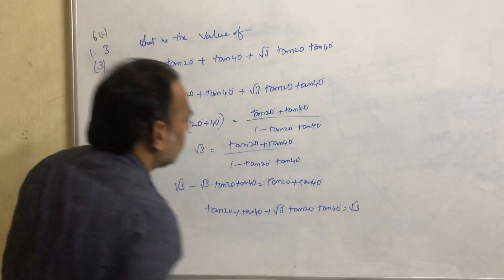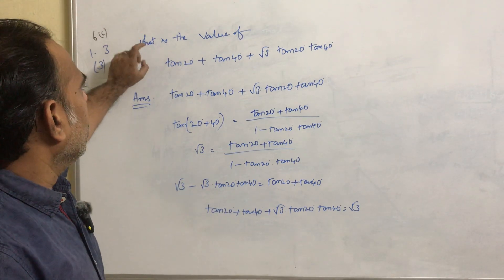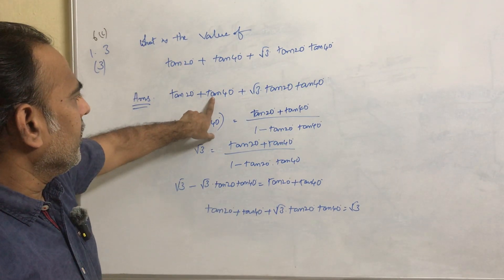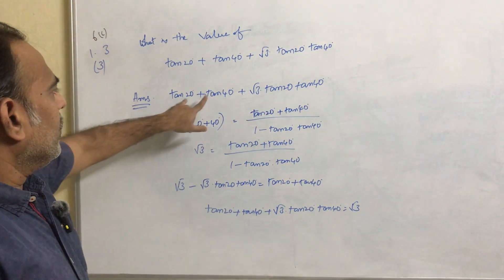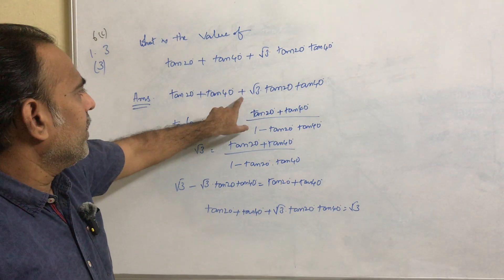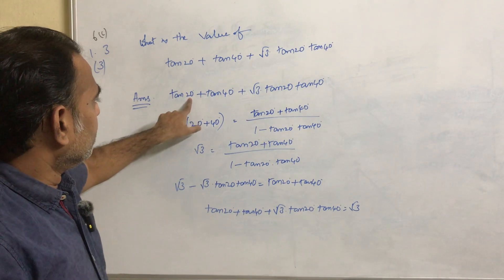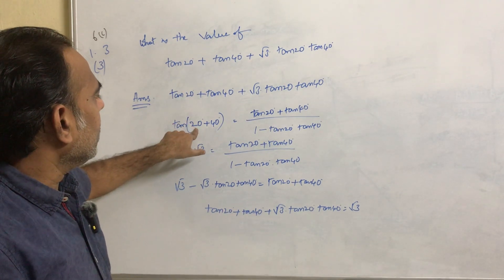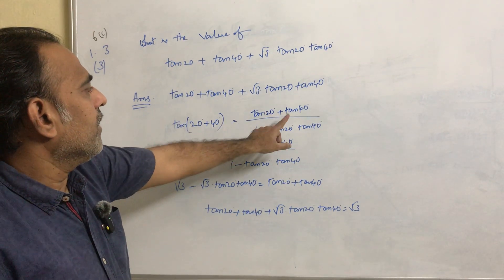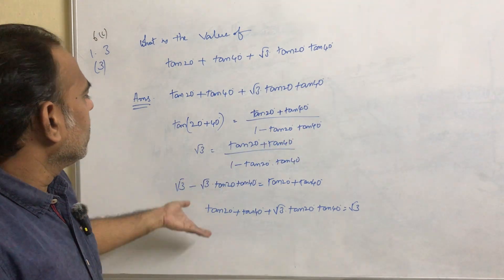Again, I will explain. First we write down what is given. If we look at this, this is tan A term plus tan B term plus tan A tan B term is there. That is why I consider tan 20° plus 40°. Tan 20° plus 40° can be written as tan 20° plus tan 40° divided by 1 minus tan 20° tan 40°.